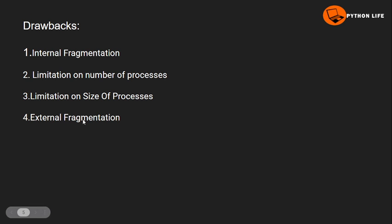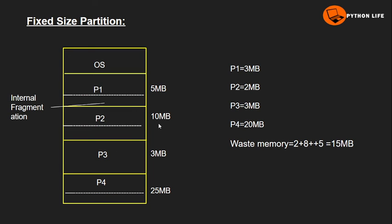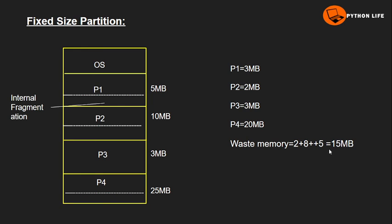The fourth drawback is external fragmentation. Even though the main memory has free space, if the P1 process has executed and freed 2MB, P2 has freed 8MB, and P4 has freed 5MB, the total free space is 2 plus 8 plus 5 equals 15MB. However, because this free space is scattered in different partitions, we cannot use it to store another process. This is called external fragmentation.